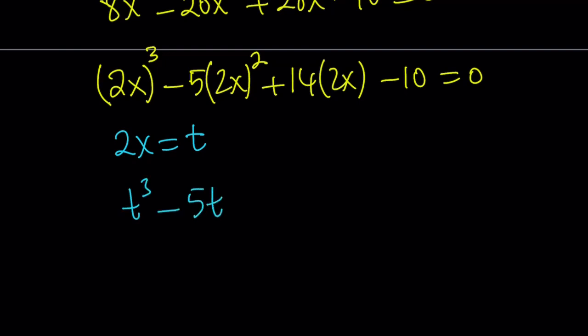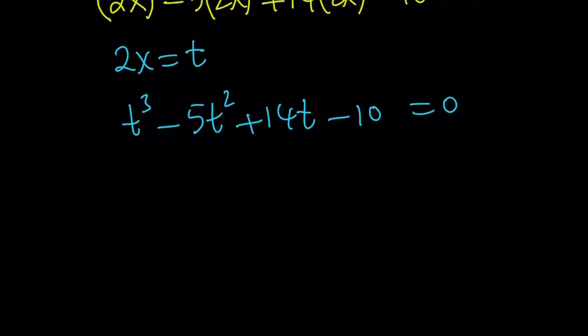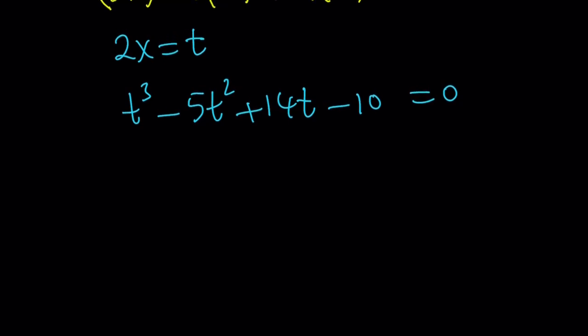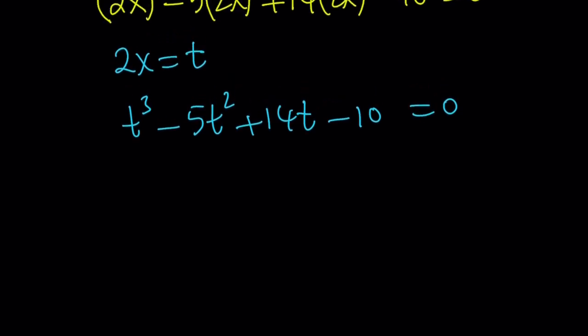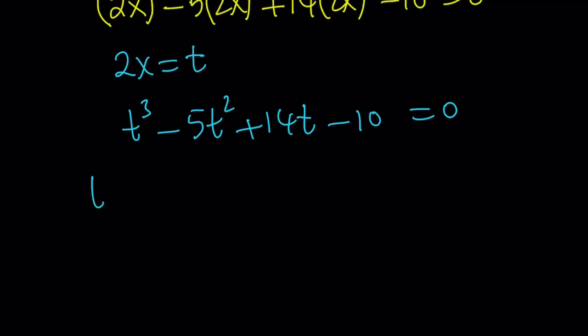And then you're going to get t cubed minus 5t squared plus 14t minus 10 is equal to zero. And yay, we got a monic polynomial. Monic means the leading coefficient is one. But not only that, this is a very special polynomial. Remember, I've been telling you all the time. Check the sum of the coefficients. What is one plus 14? 15. What is negative five plus negative 10? Negative 15. Their sum is zero. Awesome. So t equals 1 is a solution. Beautiful.